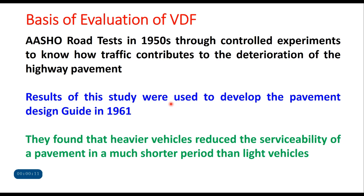AASHO — which stands for American Association for State Highway Officials — carried out a series of controlled experiments during the late 1950s to know how traffic contributes to the deterioration of highway pavements. The results of this study were used to develop the pavement design guide in 1961. These tests were for a pavement of known composition subjected to repeated load applications of trucks of different axle loads, and the number of passes required to fail the pavement were noted. This introduced the concept of load equivalency factor, which we commonly call vehicle damage factor. They found that heavier vehicles reduce the serviceability of a pavement in a much shorter period than light vehicles, and that is where this concept of equivalent axle load started.